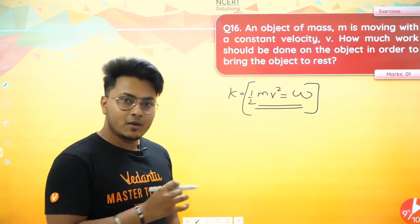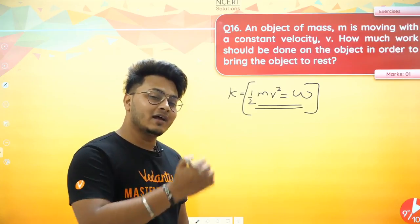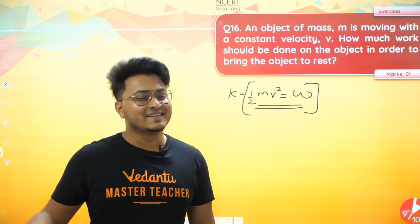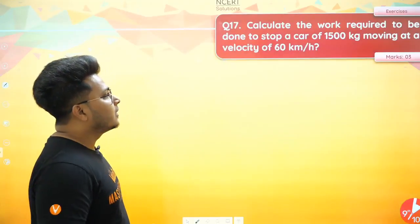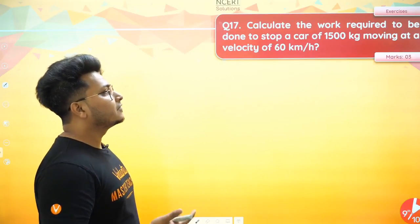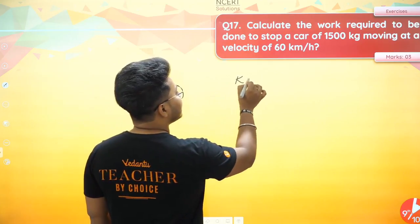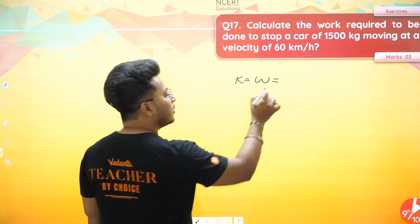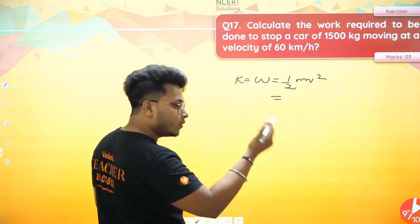Question 17: Calculate the work required to stop a car of 1500 kg moving at a velocity of 36 km/h. This is the same formula — work done equals kinetic energy. The velocity 36 km/h needs to be converted to meters per second, which gives us 36 × (1000/3600) = 10 m/s.